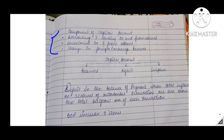The third component of the capital account is changes in foreign exchange reserves. Foreign exchange reserves are financial assets held in the central bank. Whenever reserves are withdrawn, the central bank gives us foreign exchange — it leads to inflow of foreign exchange — so we include it on the credit side. Whereas when we deposit into reserves, that is recorded on the debit side, because foreign exchange will decrease.